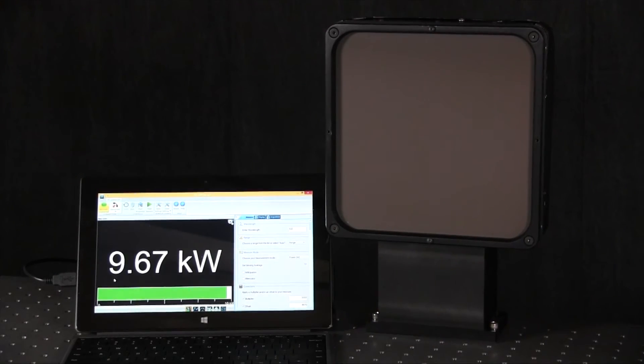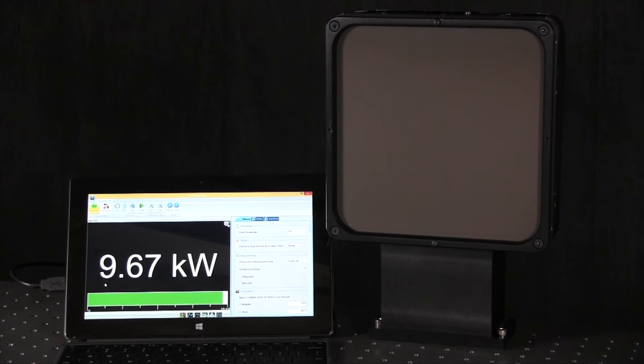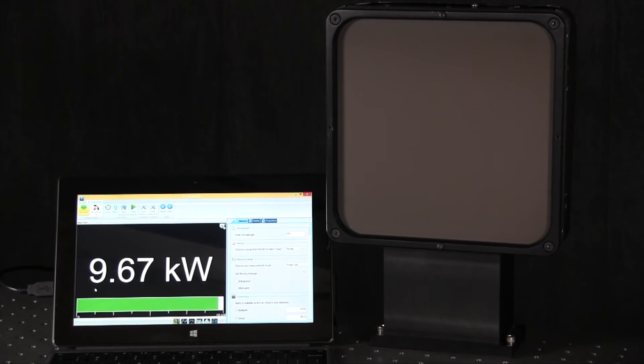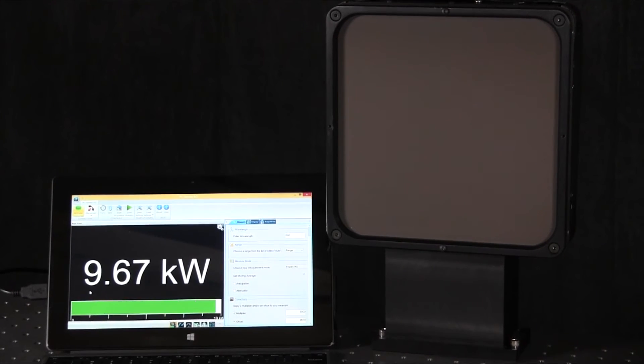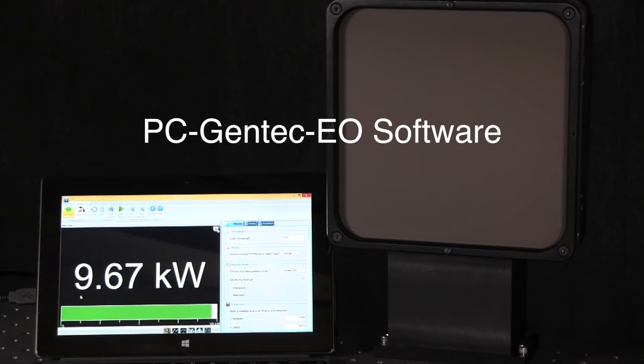Another way to use our HP or Super HP probes is to connect them directly to a PC using the USB 2.0 connection on the probe. You'll then be able to use our intuitive, powerful PCGentech EO software to make your high power laser measurements.